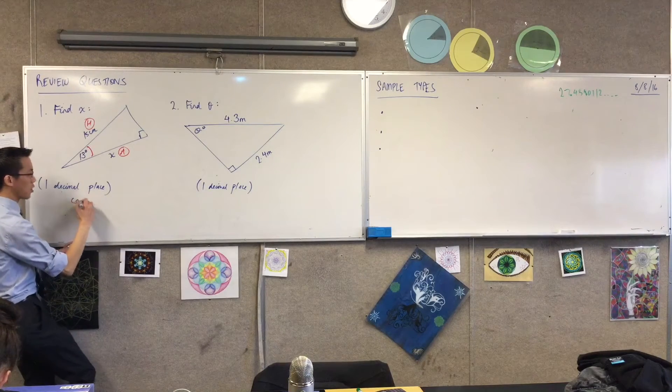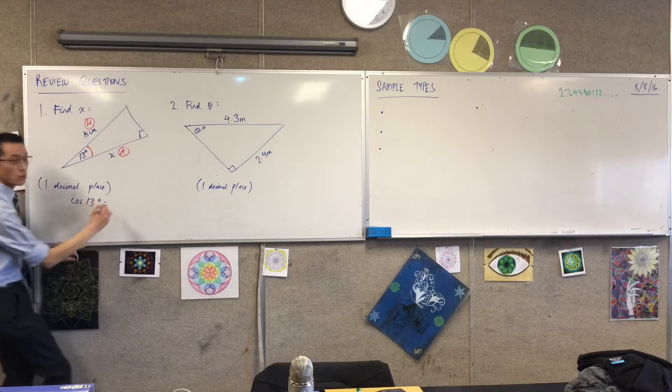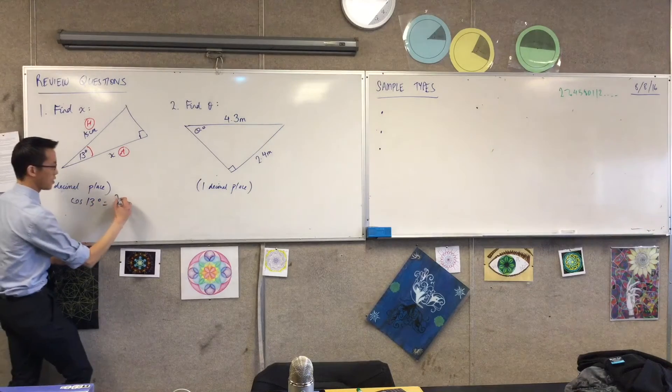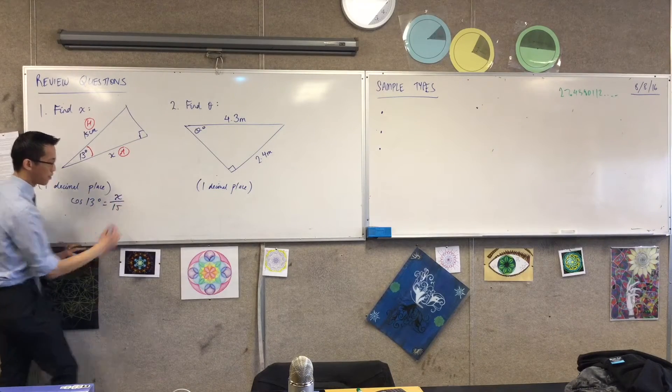Okay, so like you said, cos 13 degrees equals... adjacent on hypotenuse, happy times.